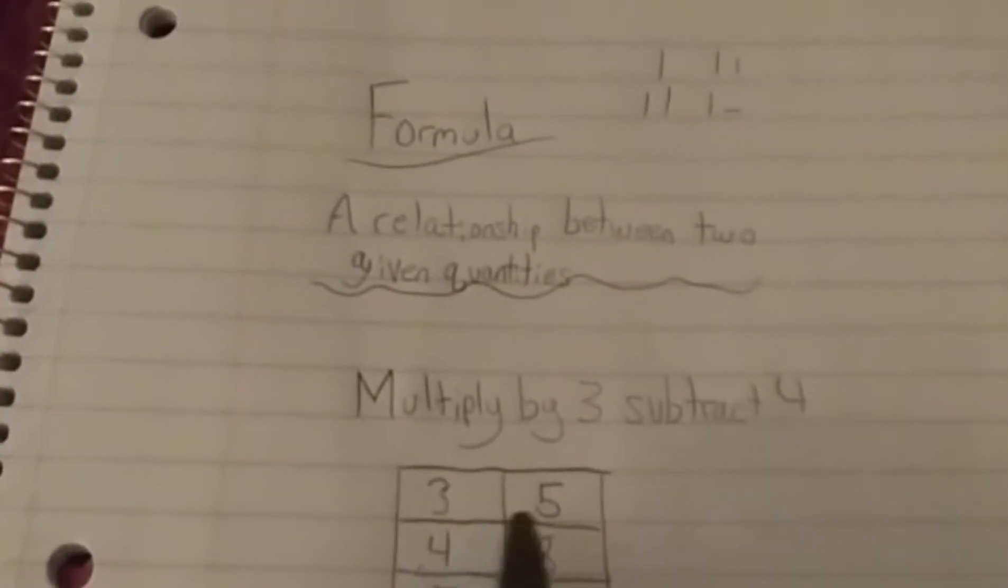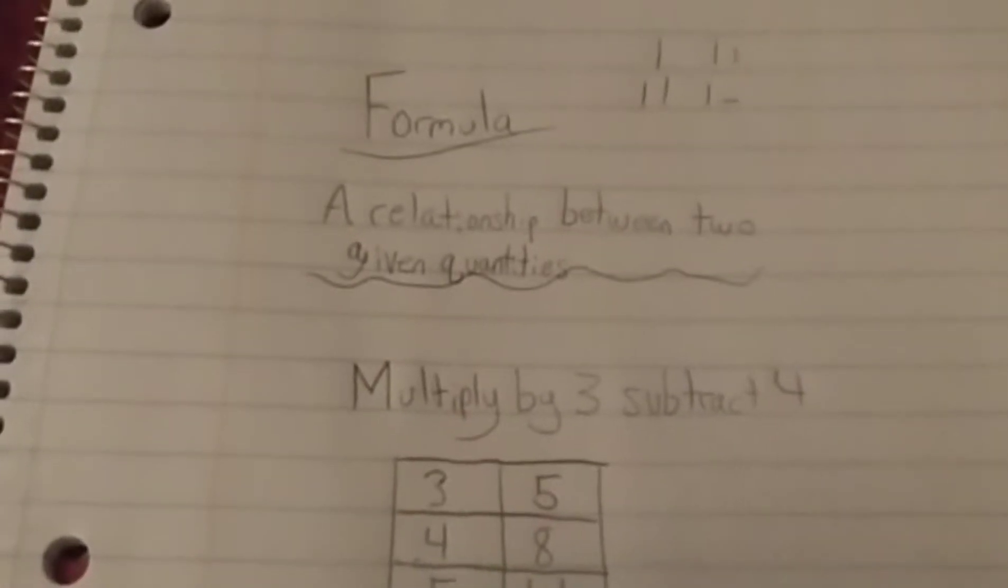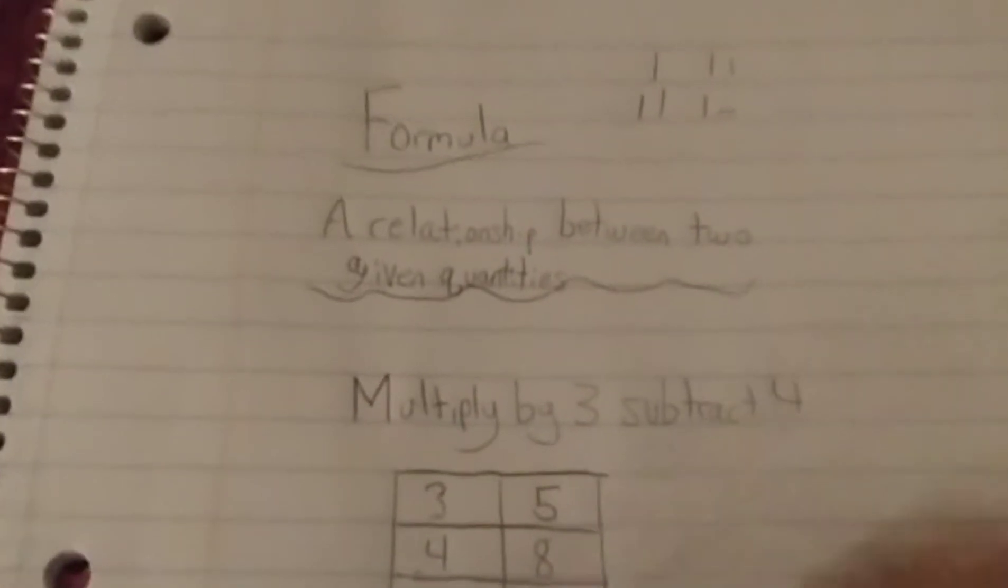So say that the equation is, or the formula is to multiply by 3 and then subtract 4. 3 multiply by 3, subtract 4 would be 5. 4 is 8, 5 is 11, 6 is 14, and so on.